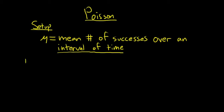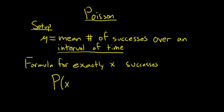The formula for exactly x successes is the following. So it's P of x, and it's a fraction. It's a scary looking formula. It's E, this is the E for math, E is like 2.7 something, negative mu times mu to the x over x factorial.